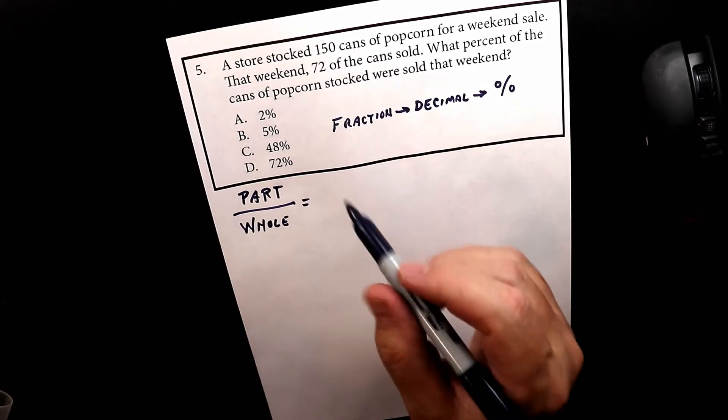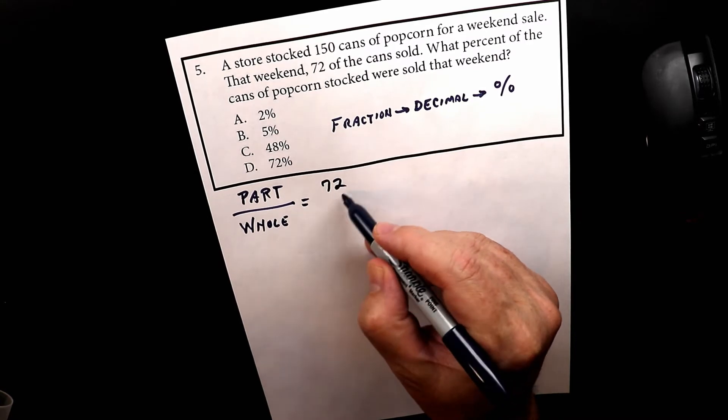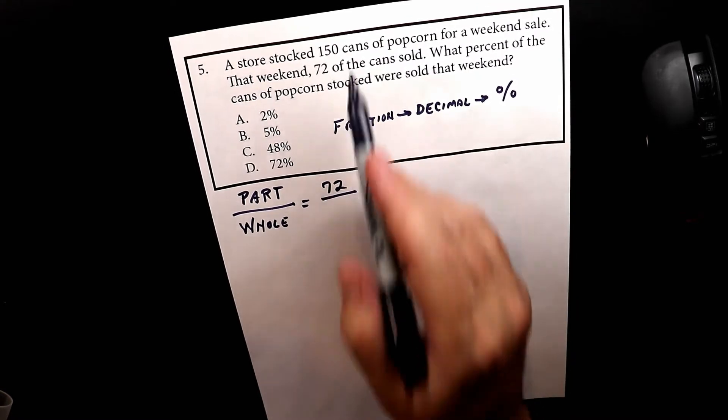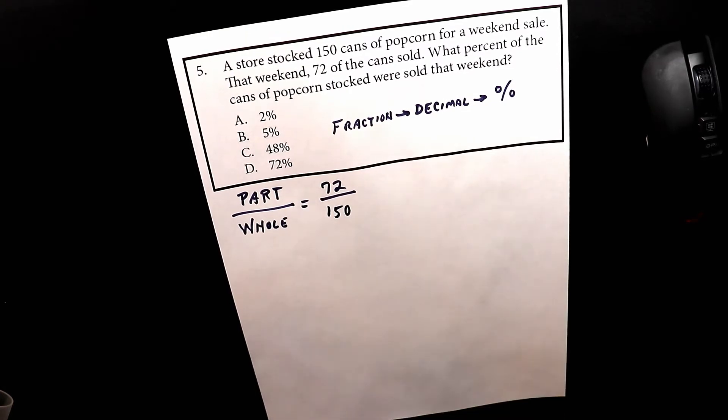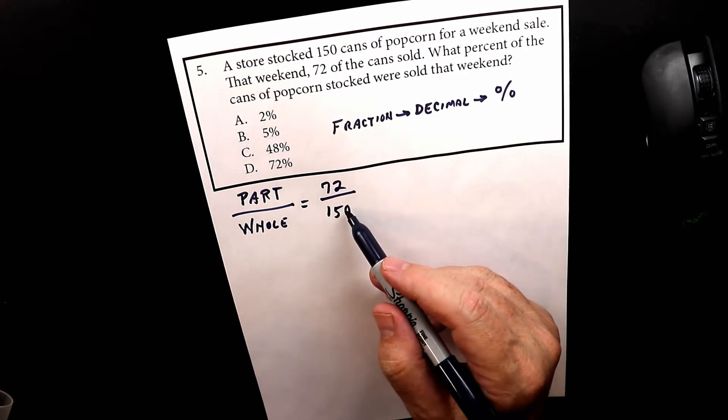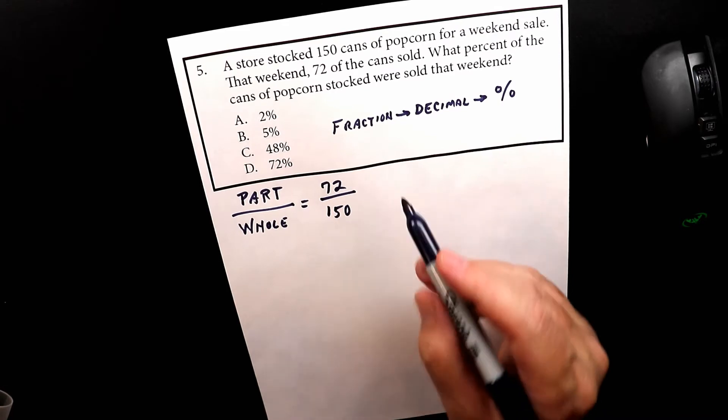So in this case, the part is 72, and then the total was 150. So the whole amount was 150. So the part over the whole.